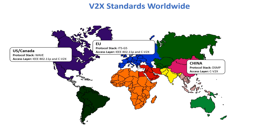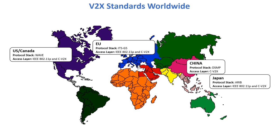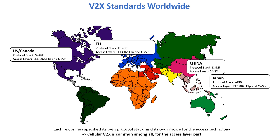In China, the access layer uses Cellular V2X with their own protocol stack. In Japan, they have a standard based on the US WAVE and DSRC standard. Each region has specified its own protocol stack and its own choice for the access technology.